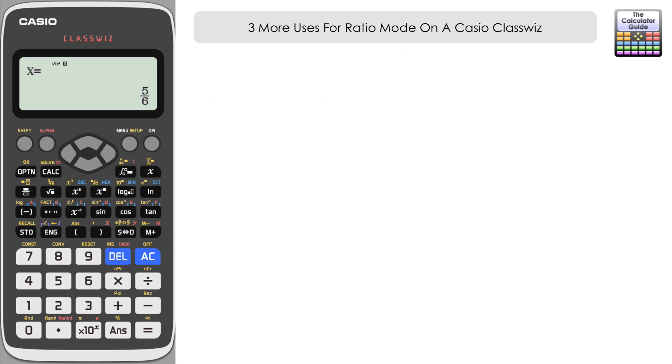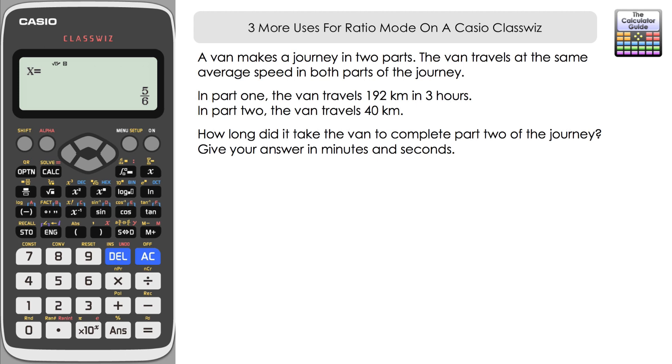So the third use then here that we've got is a journey where we've got the same average speed throughout. Let's take a look at the question. A van makes a journey in two parts. The van travels at the same average speed in both parts of the journey. And that's quite important. In part one, the van travels 192 kilometres in three hours. In part two, the van travels 40 kilometres. And the question is, how long did it take the van to complete part two of the journey? Give your answer in minutes and seconds.